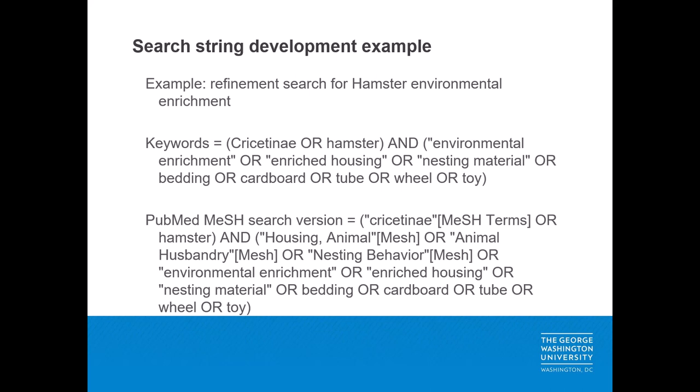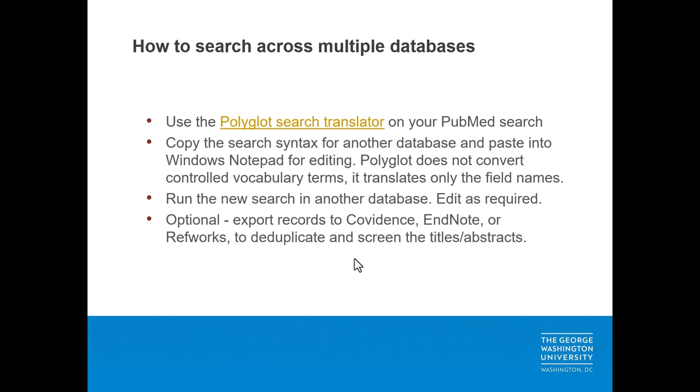The PubMed Medical Subject Heading search maps Cricetinae to a medical subject heading for the scientific name for the species, so we would want to include that or the keyword hamster. In addition to the terms already identified for the refinement alternatives, the medical subject headings in PubMed for this topic might include animal housing — which maps to 'housing, animal' in PubMed — or animal husbandry, or nesting behavior. To perform the search across multiple databases, you would typically start by formulating a PubMed search using a relevant combination of medical subject headings plus keywords.